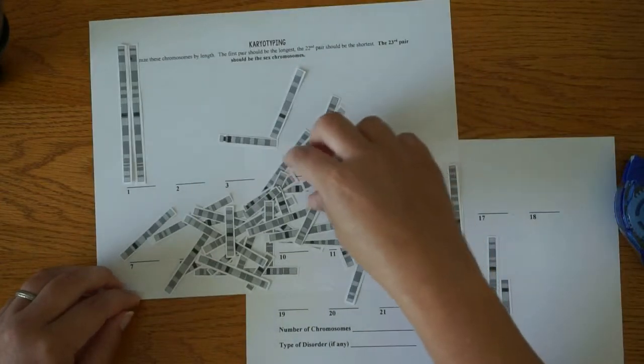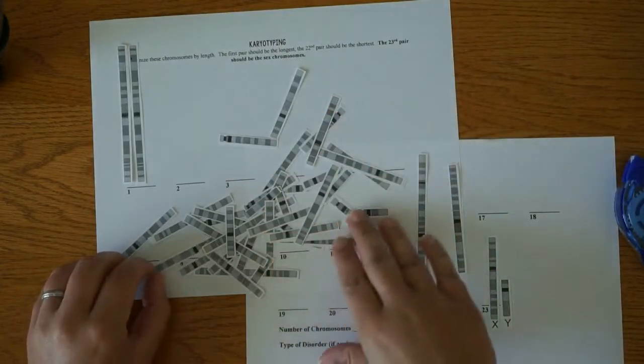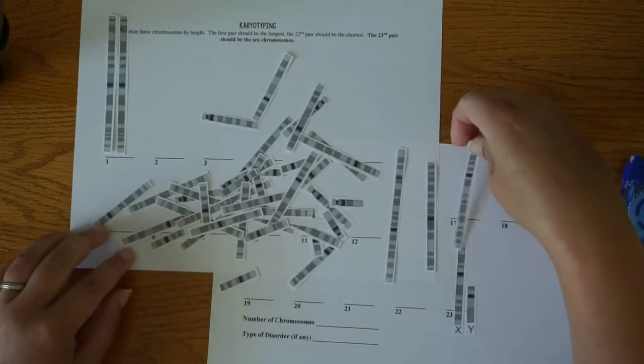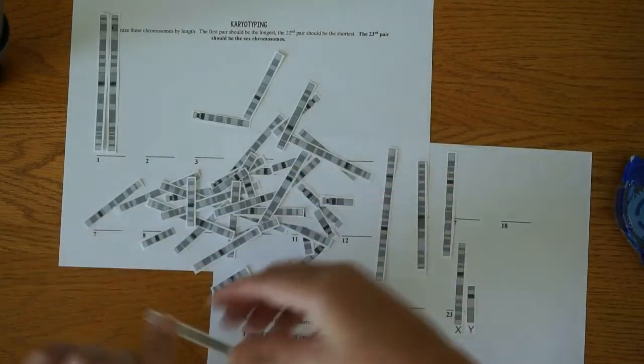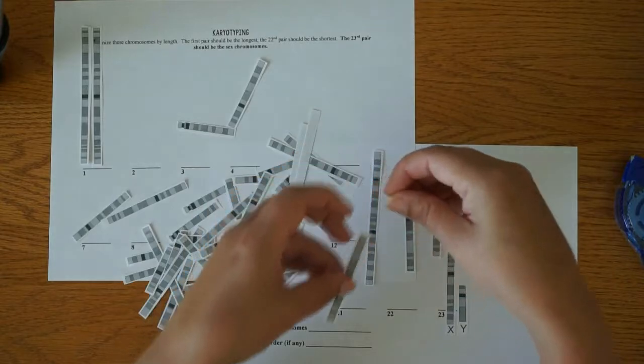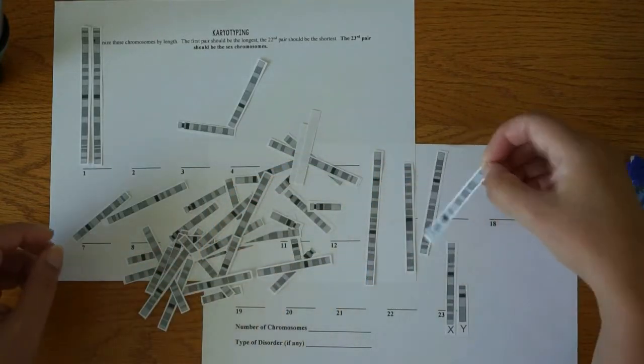So you will probably want to pair up all of your chromosomes first and then put them on the paper and glue them down very last. If you glue them down too fast, then you will end up regretting something and putting something in the wrong place.